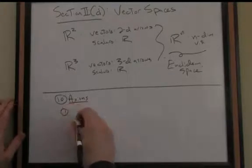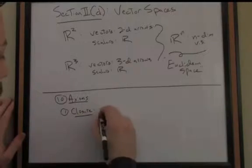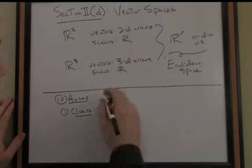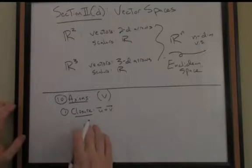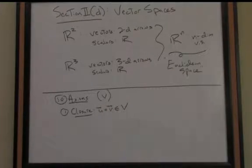So for instance, one of those axioms is called a closure axiom, or closure condition. In other words, if I just take two vectors in my vector space and add them together, I'm going to call my vector space V, capital V here. If I add two vectors together in my space, I get closure. In other words, the sum of those vectors is still a vector in the space, still an arrow in the space.